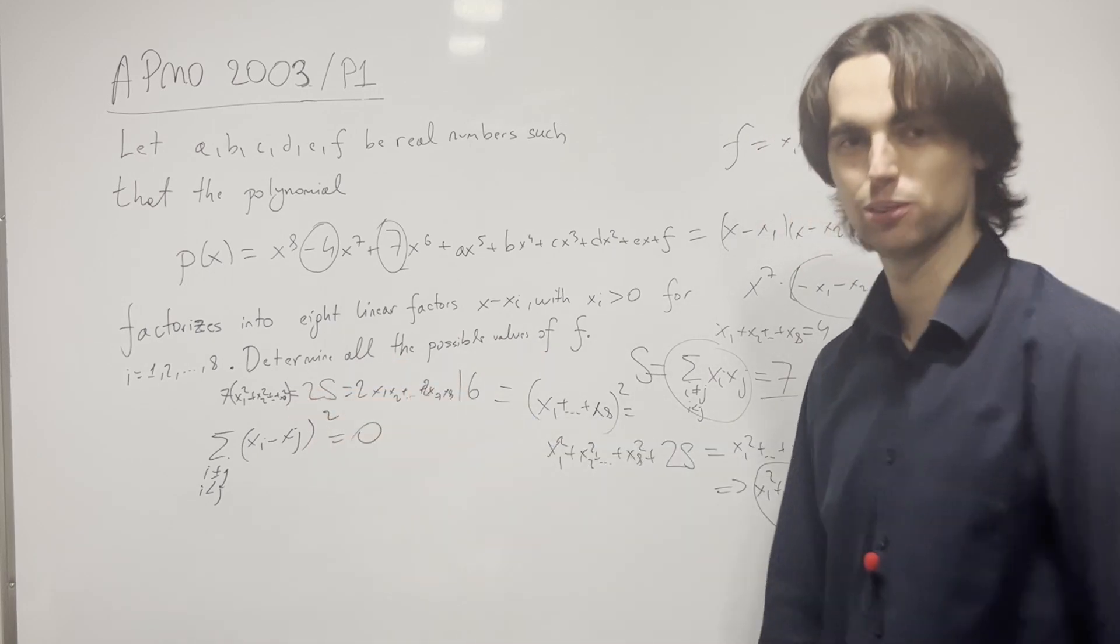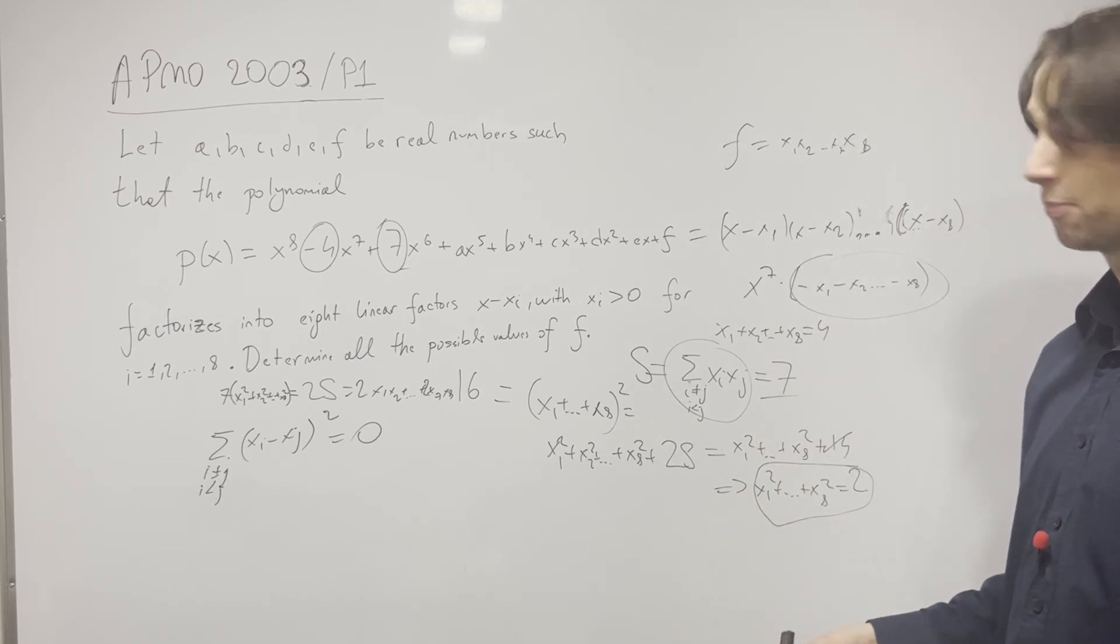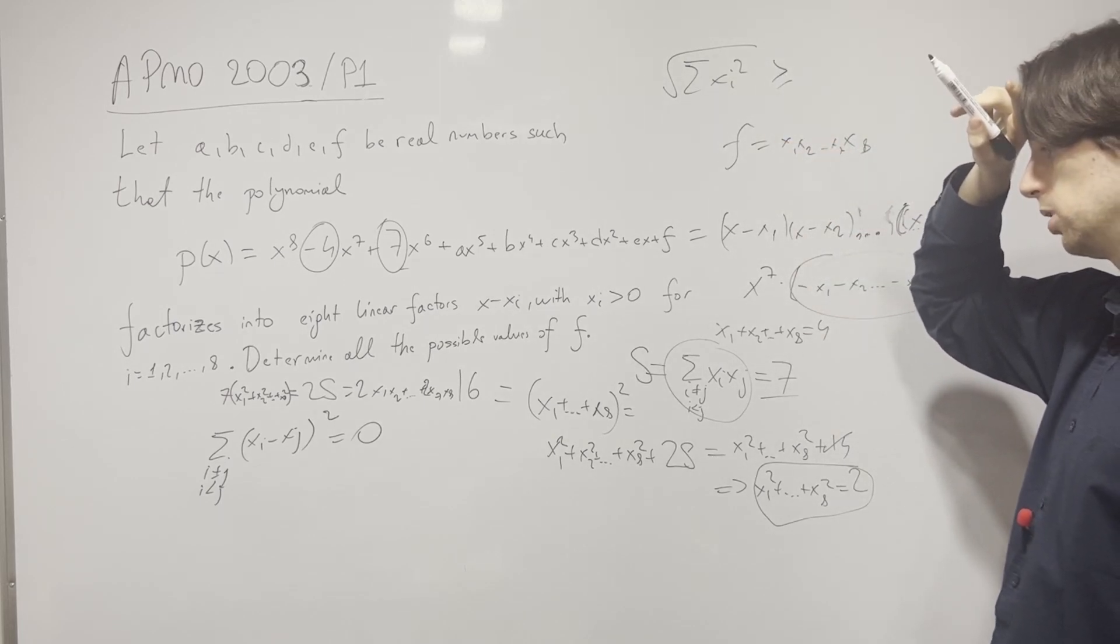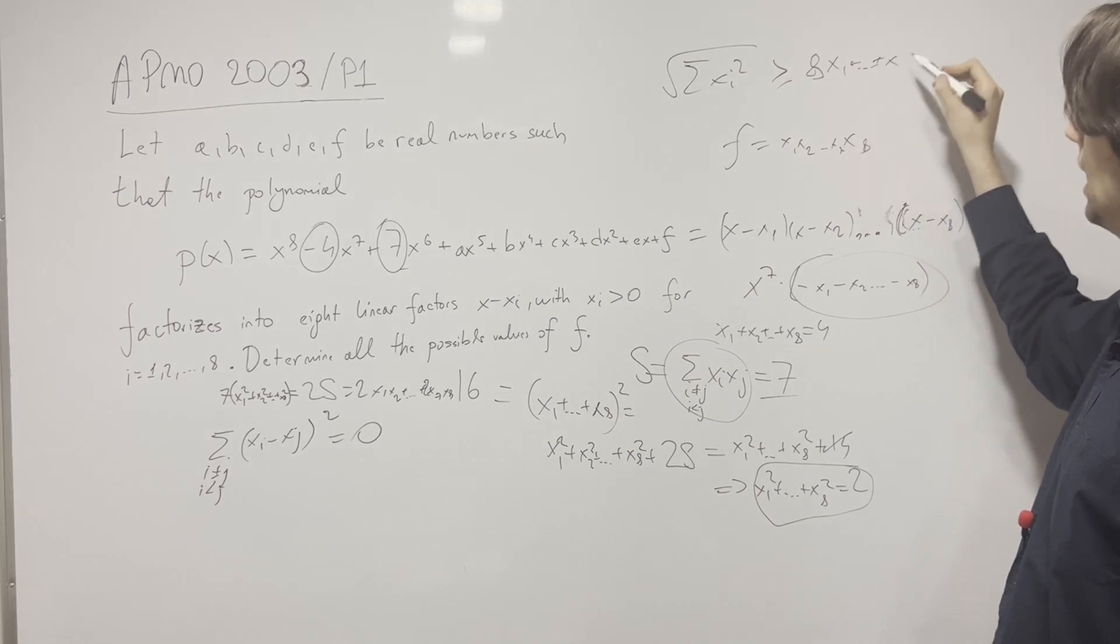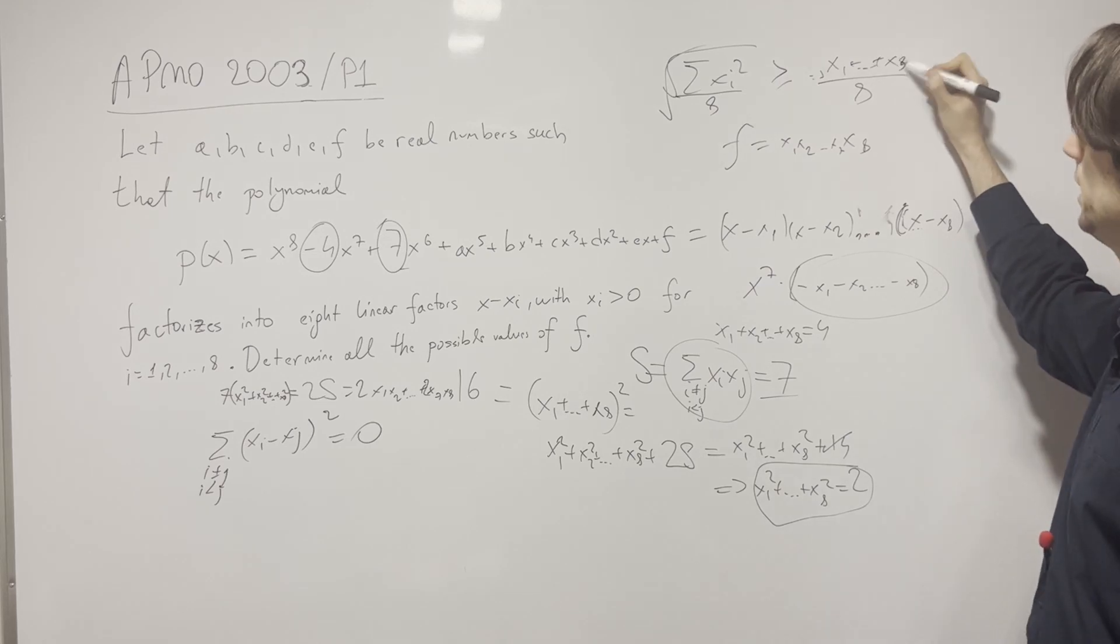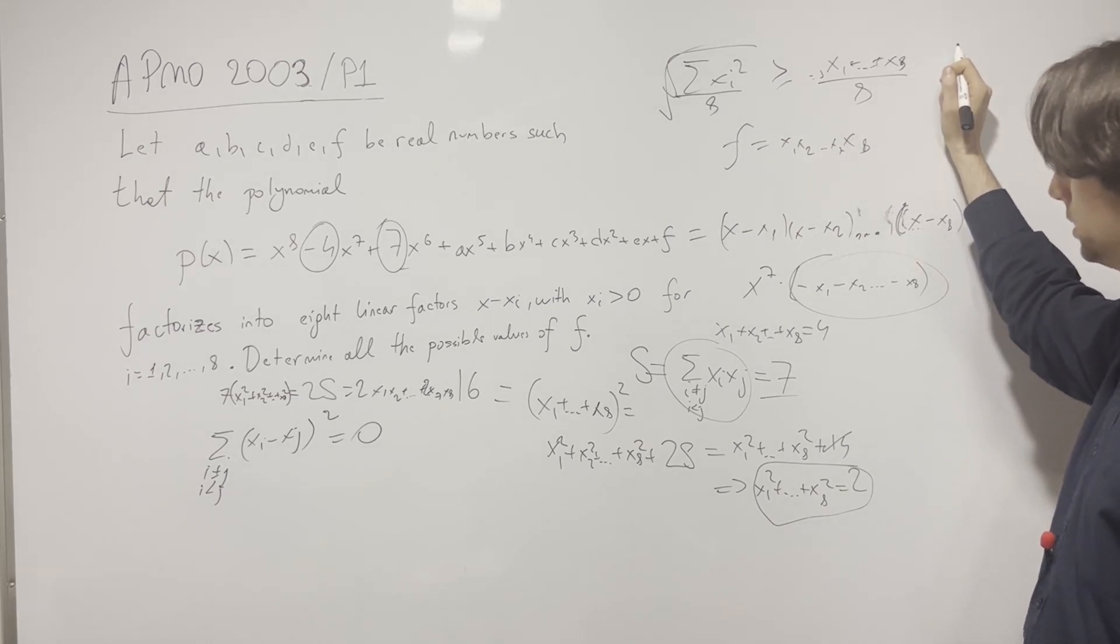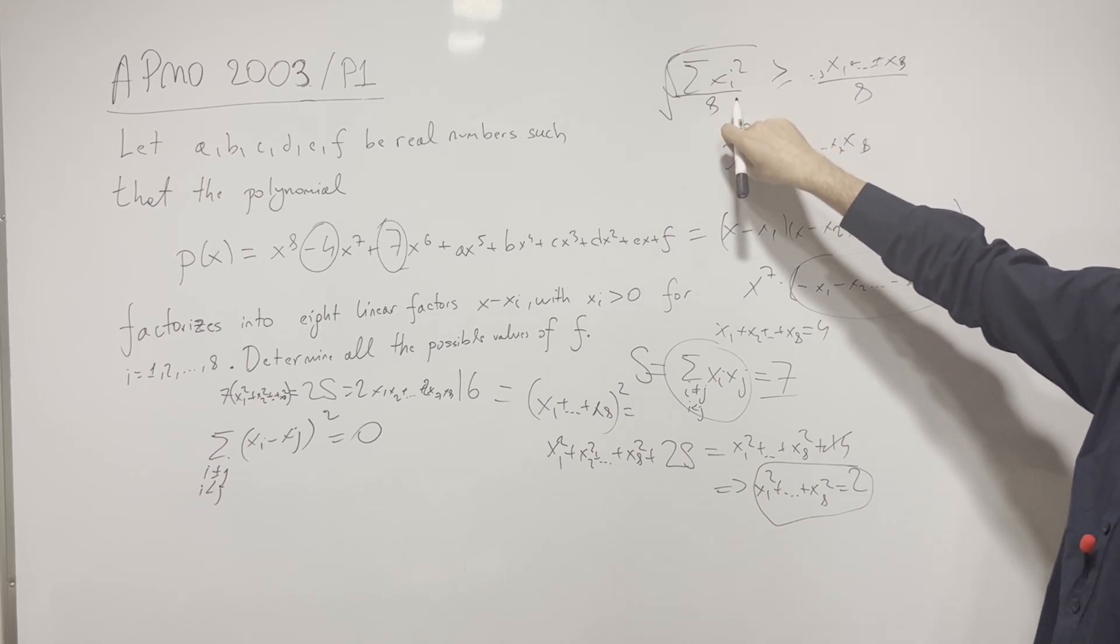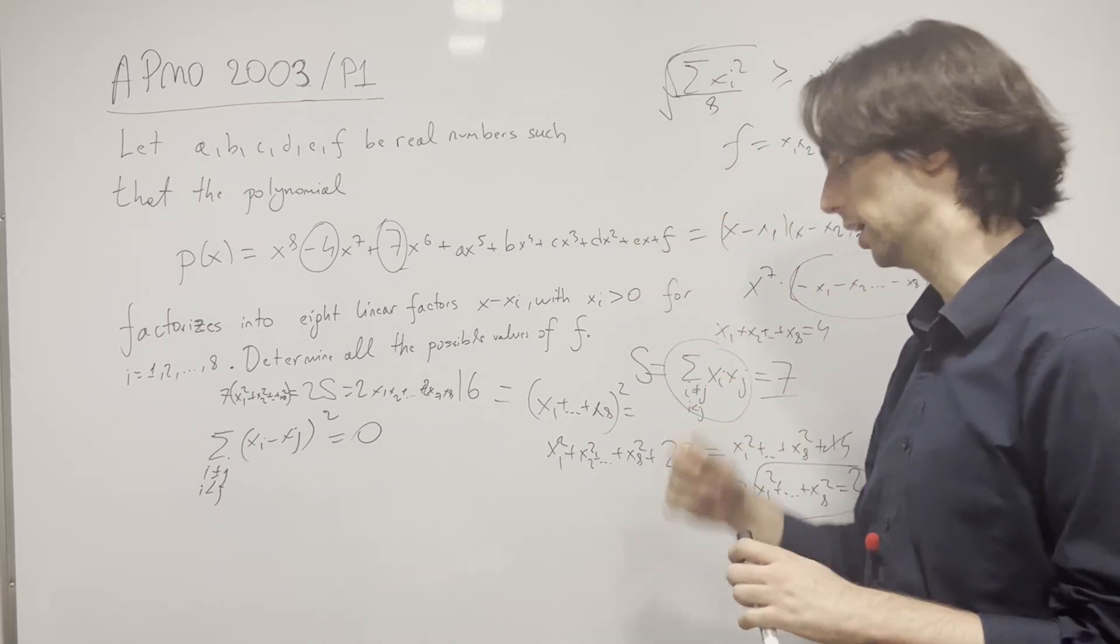And now what do we do? Sum of squares equals 0. We could have also used the arithmetic and quadratic means inequality—the square root of the sum of xi^2 over 8 is greater than or equal to the sum of xi over 8. This needs to be an inequality, but if we plug in the values, we get sqrt(2/8) = 1/2 and 4/8 = 1/2. We have equality, which means all the xi's are equal. So those are the two ways we could have gone to equality.